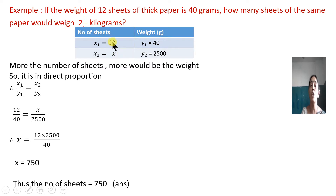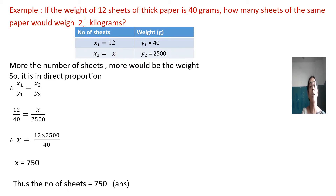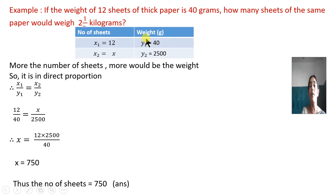When the weight increases, naturally the number of sheets of paper would also be more. Here it is 12 sheets with weight 40, and if the weight is more — 2500 — that means more number of papers. So the values are increasing. When the value of X is increasing, the value of Y is also increasing. When both X and Y are increasing, then it is a direct proportion. More the number of sheets, more would be the weight. So it is in direct proportion.